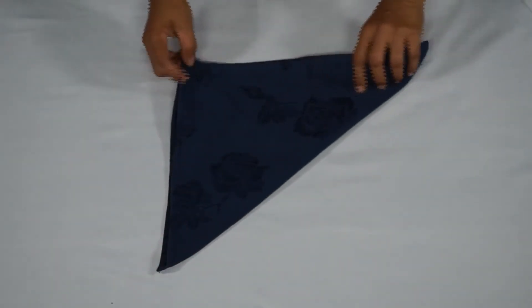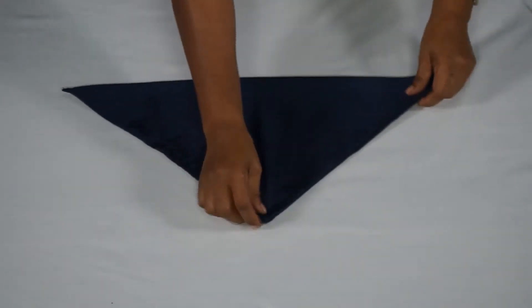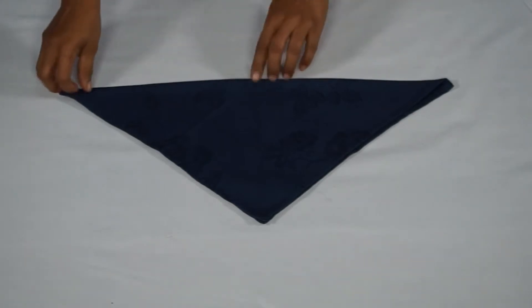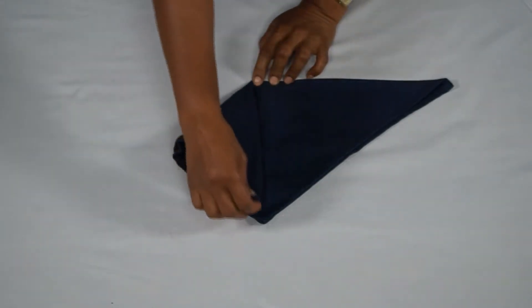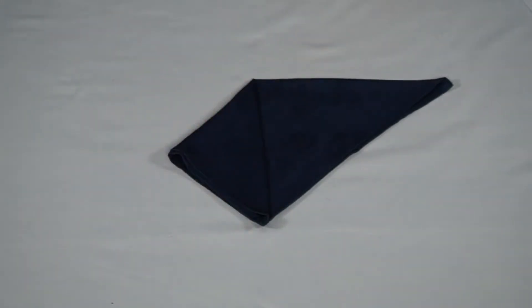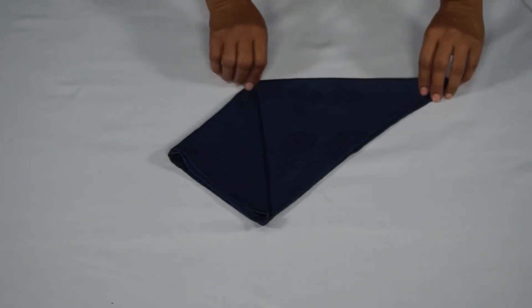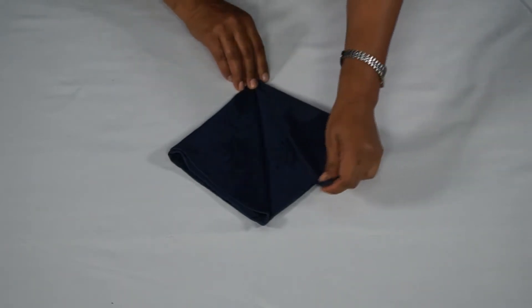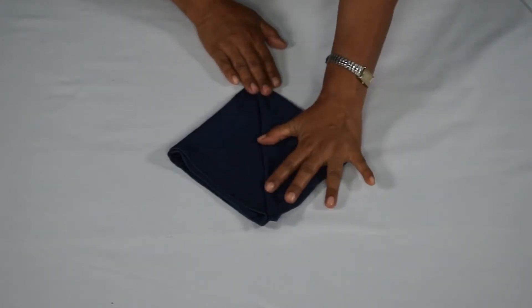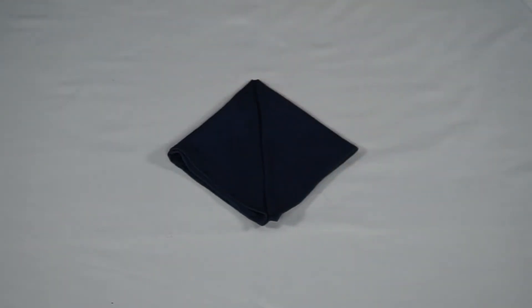Rotate the napkin so the open end faces away from you. Fold the right end up to meet the far corner. Ensure the edge of this new fold lays on the center line. Repeat the last step with the left side, folding the left tip up to the far corner, creating a diamond shape with a seam running down the center.